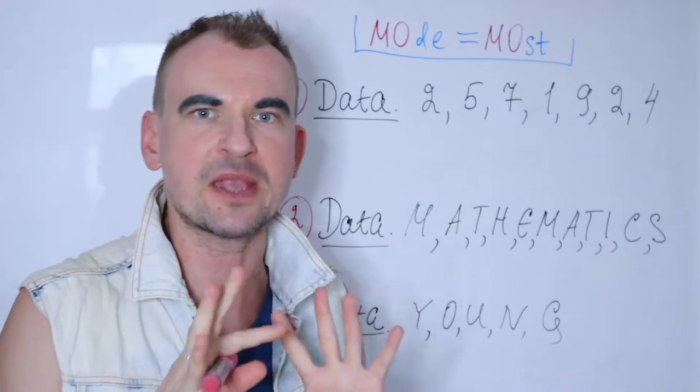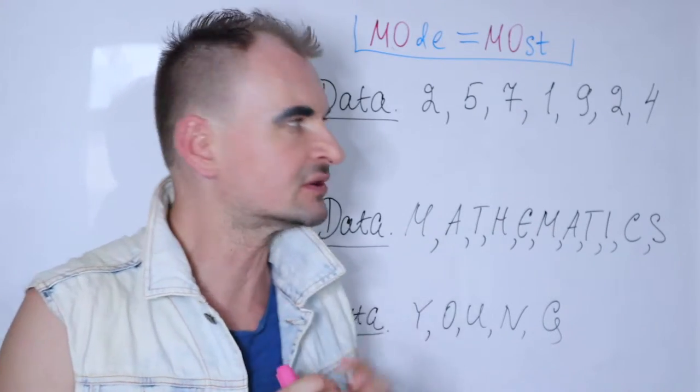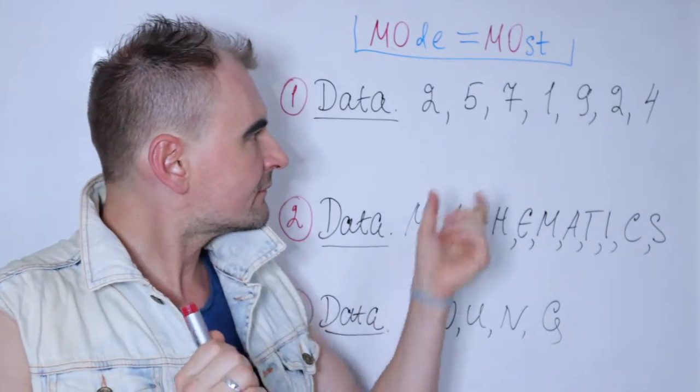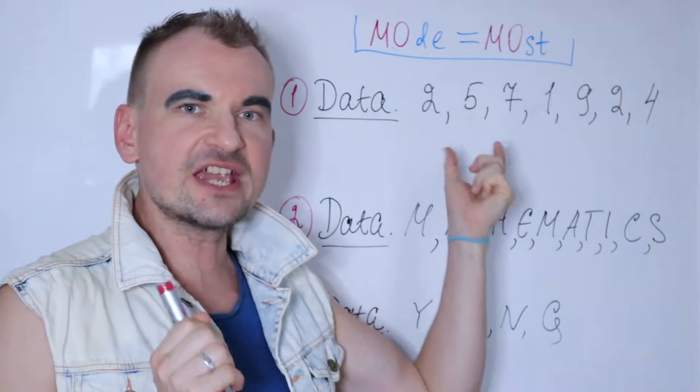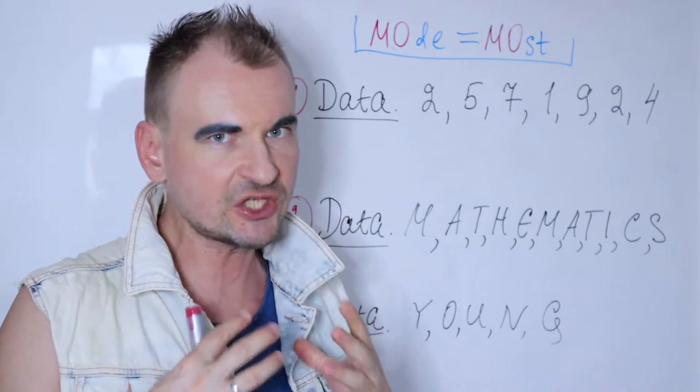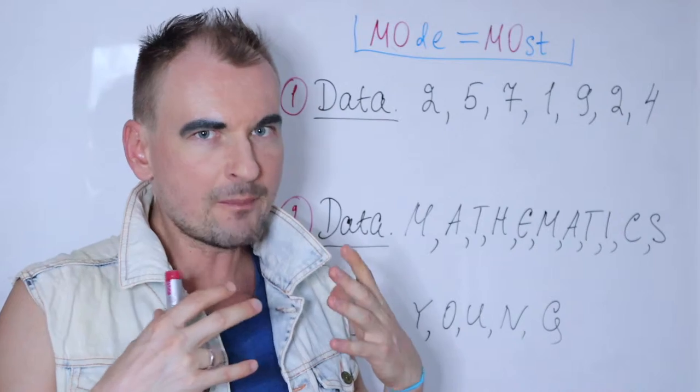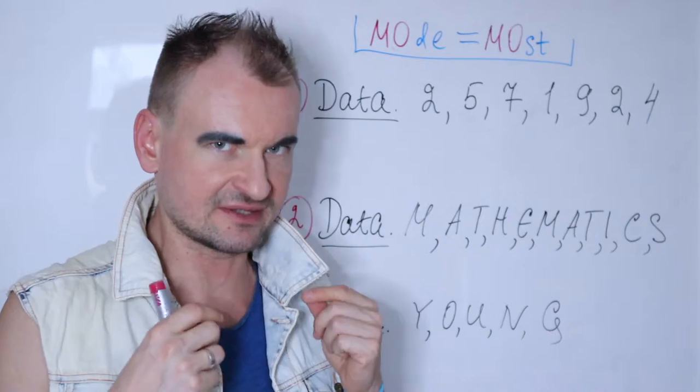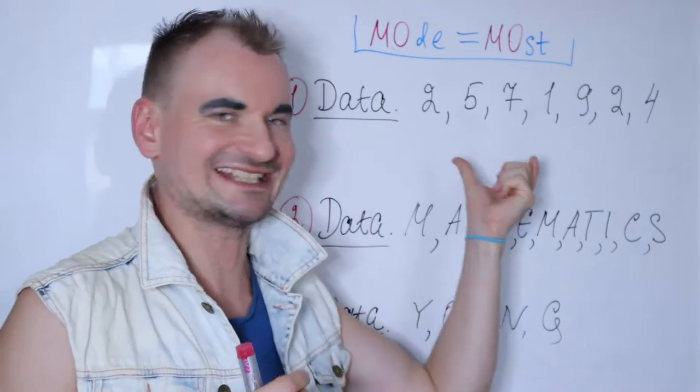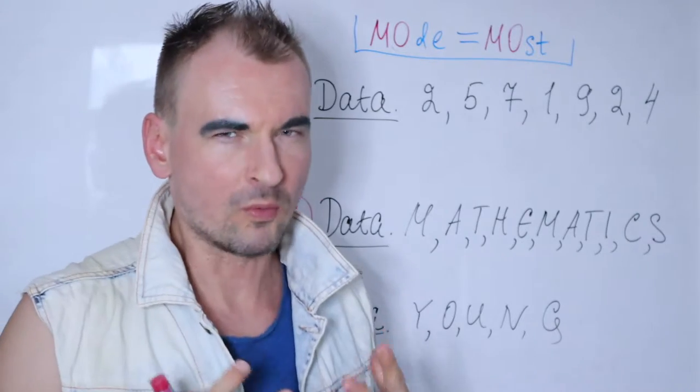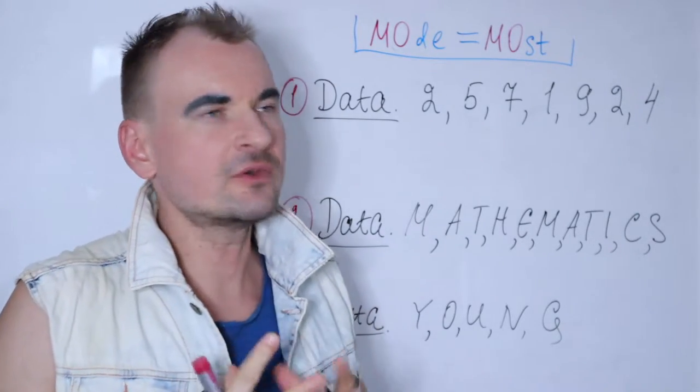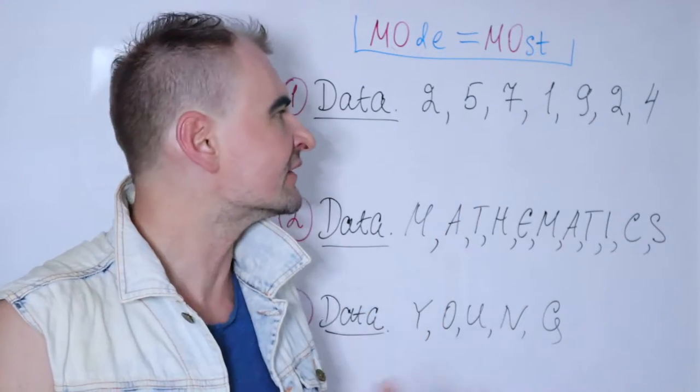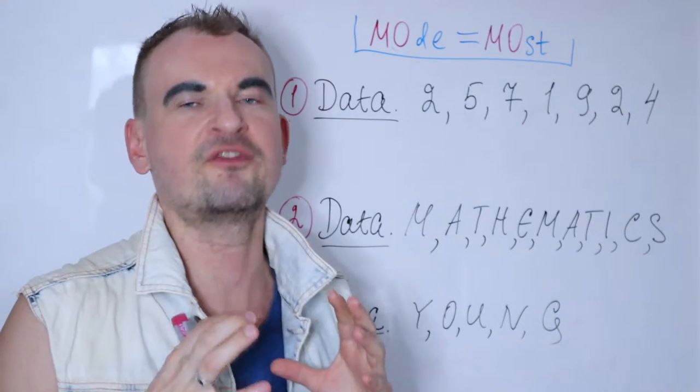It could be numbers, letters, or anything else. Well, the observation, the data value that occurs the most number of times, that appears the most number of times in your data set, is called a mode. In other words, the data value that shows up the most frequently.